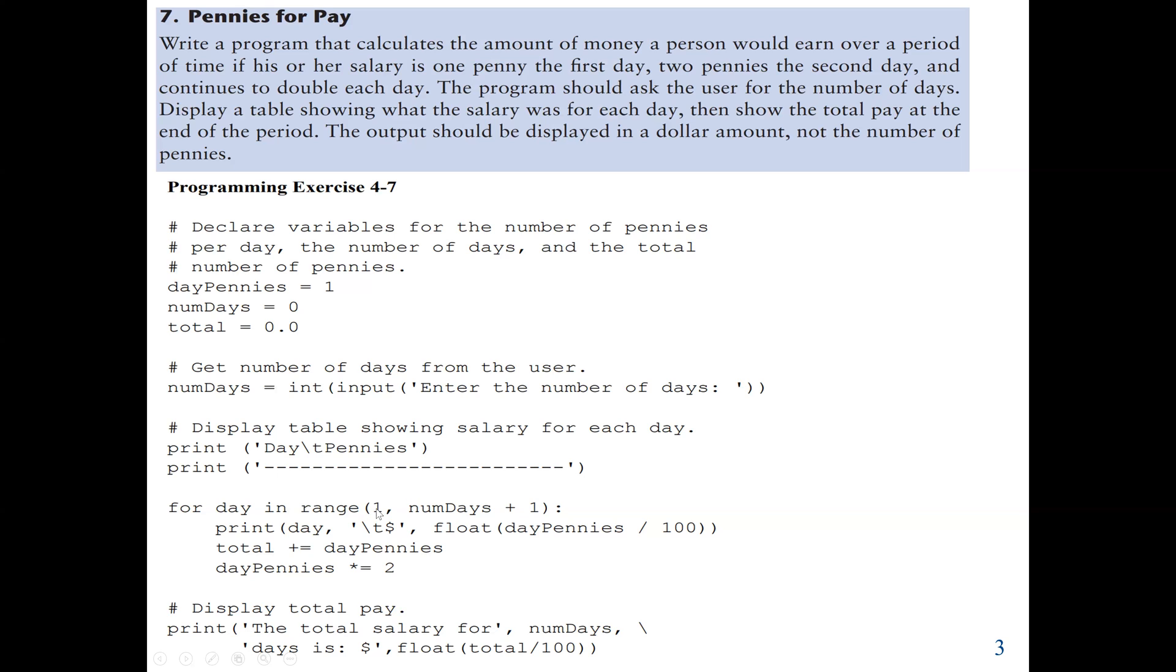We start from the first day. We get the day pennies and print the day, then the day pennies divided by 100, converted to float. Then we find the total pennies: total equals total plus day pennies. The question said each day doubles, so we have day pennies equals day pennies times 2.